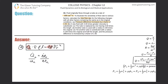So if the pressure increases by a factor of 1.5, the pressure in the new case is going to be 1.5 times the original pressure. In other words, I can write delta P original divided by 1.5 times that original pressure differential.